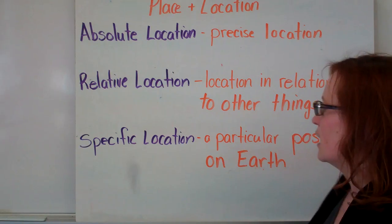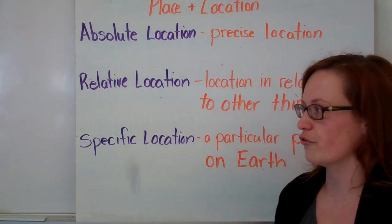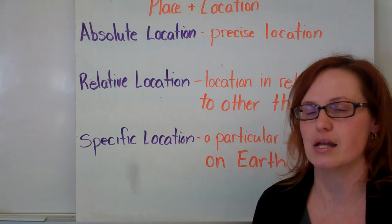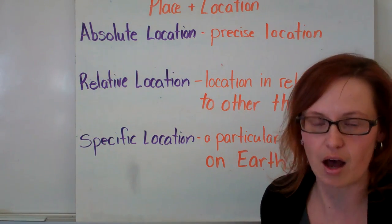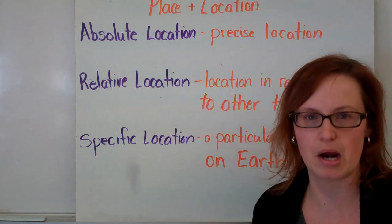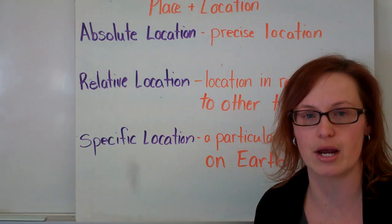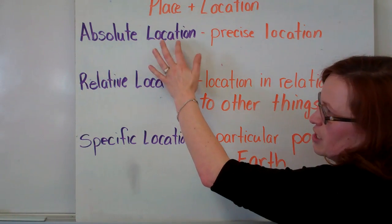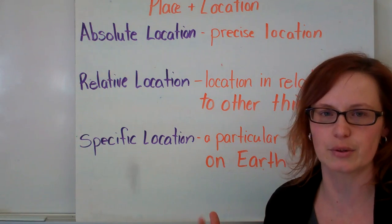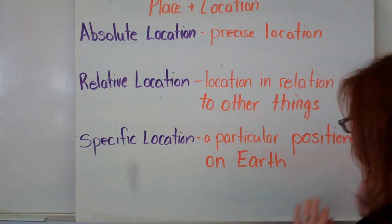Specific location. Specific location is your particular place on the earth. So for example, right now I'm filming in class 108 in Thomas Street Middle School in Mississauga, Ontario, Canada, North America of the earth. That is my specific location. It's a little less specific than absolute location, and my relative location is I'm down the street from a Petro-Canada on the corner.